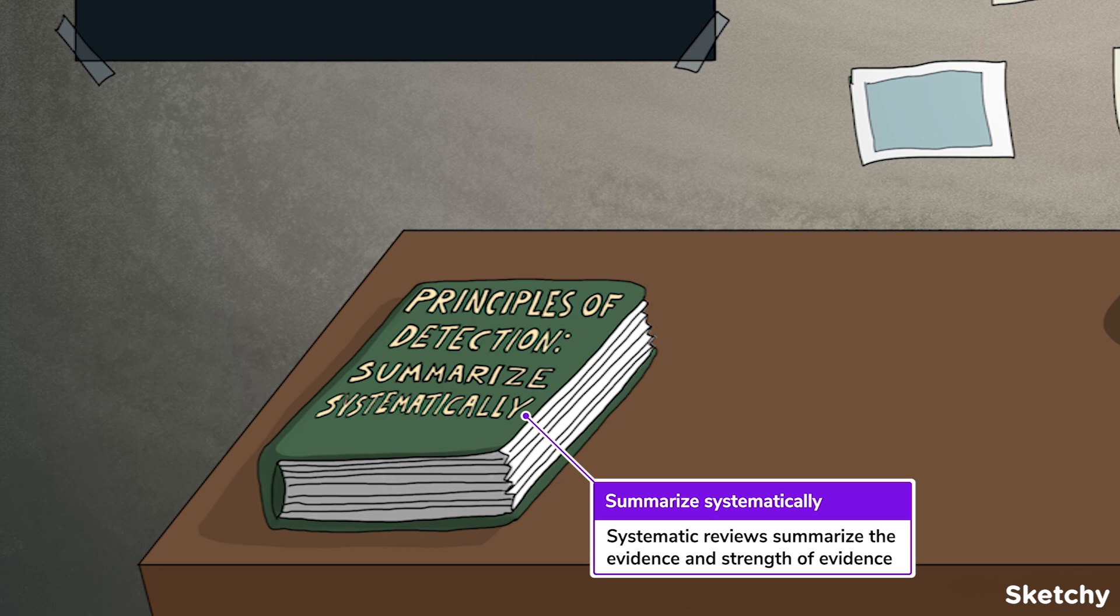The systematic review is a paper that collects all of the available articles on a particular research question. It summarizes the evidence and the strength of evidence that supports the main research question. In addition, a systematic review will discuss limitations, such as study designs, bias, and confounding, identify knowledge gaps, and consider future directions.